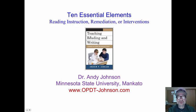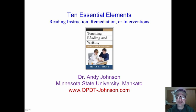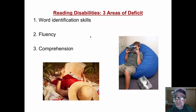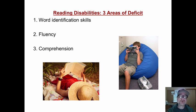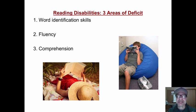Andy Johnson, Minnesota State University. We are looking at the ten essential elements for reading instruction, remediation, or any sort of intervention. First of all, there are three deficit areas when people have reading difficulties.